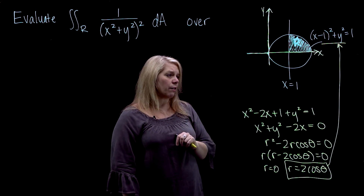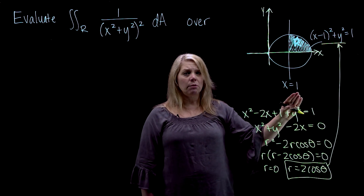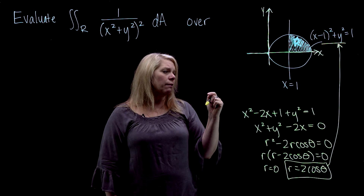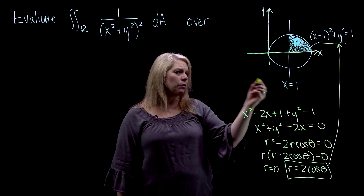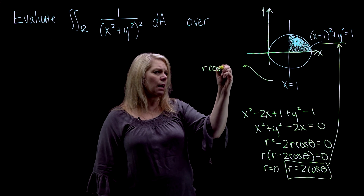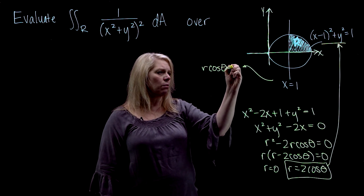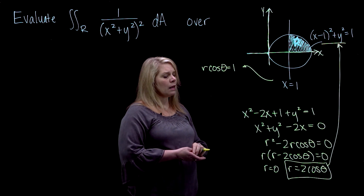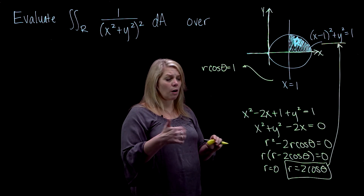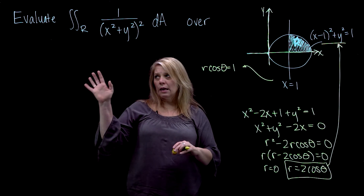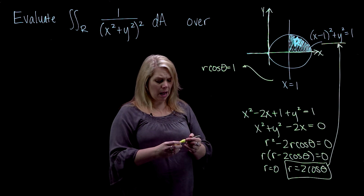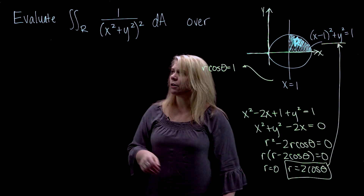The other equation I need to convert to polar coordinates is x equals 1, the vertical line. When I convert that, I use x equals r cosine theta equals 1. I'll wait to solve that for r or theta until we think about setting up the integral.